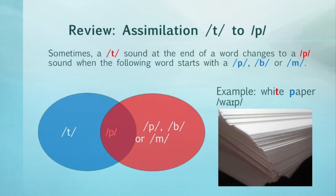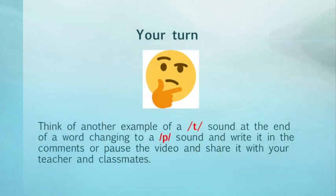To review: sometimes a T sound at the end of a word changes to a P sound when the following word starts with a P, B, or M sound. A final example is 'white paper.' Now it's your turn — think of another example and write it in the comments, or pause the video and share it with your teacher and classmates.